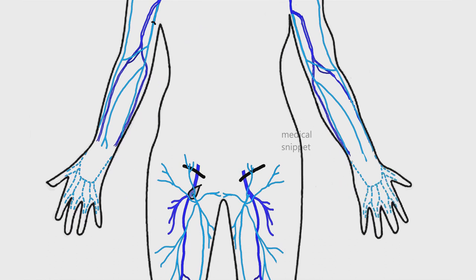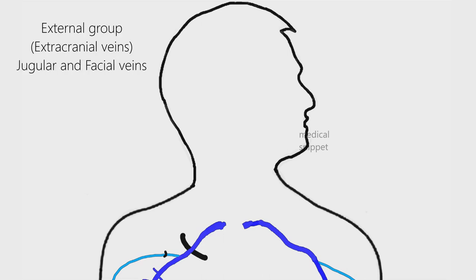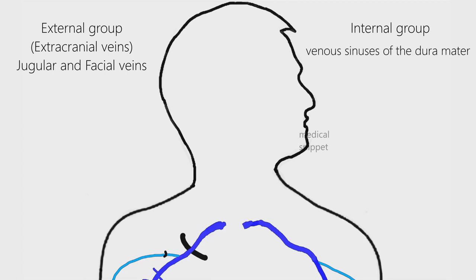Now let's discuss the venous system of the head and neck. Veins of the head and neck can be grouped into external and internal groups. The internal group consists of venous sinuses of the dura mater, emissary veins, and diploic veins.